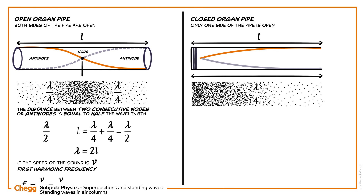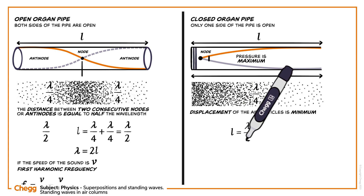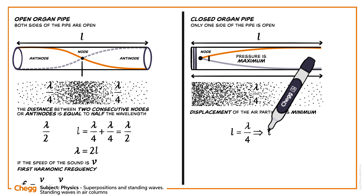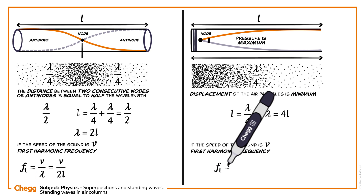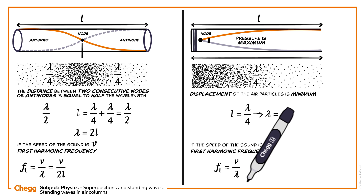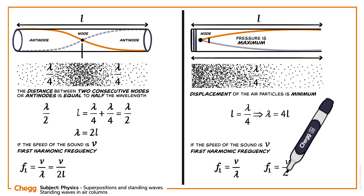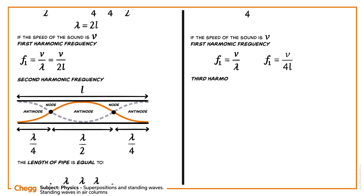At the closed end, the displacement of the air particles is minimum and pressure is maximum, so nodes are observed at the closed end of the pipe. Thus the length of the pipe l equals λ/4, which implies λ equals 4l. If the speed of sound is v, then the first harmonic frequency is f1 equals v divided by λ, or f1 equals v divided by 4l.